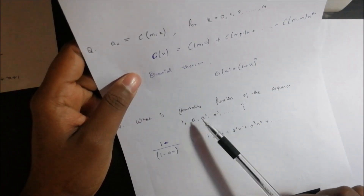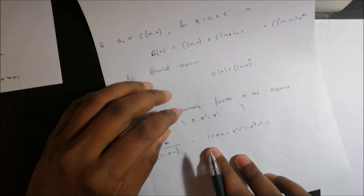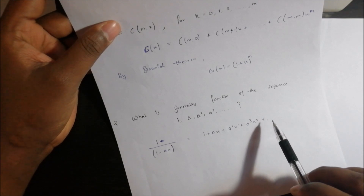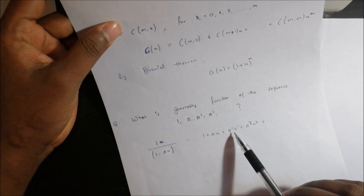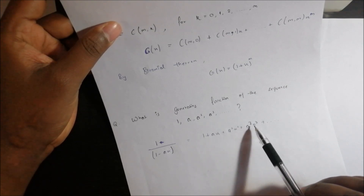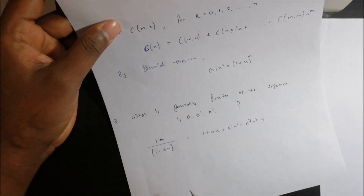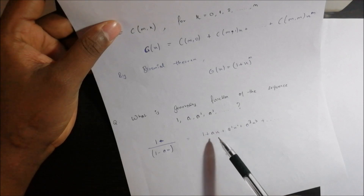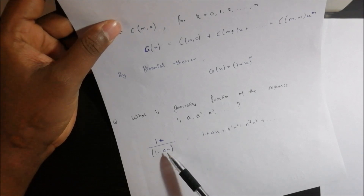According to this formula, the coefficients here are not just a's — they increase as powers: a, a², a³, ... which is the same power increase as x's coefficient. So we can substitute a·x for x, and the closed form will be 1 upon 1 minus a·x.